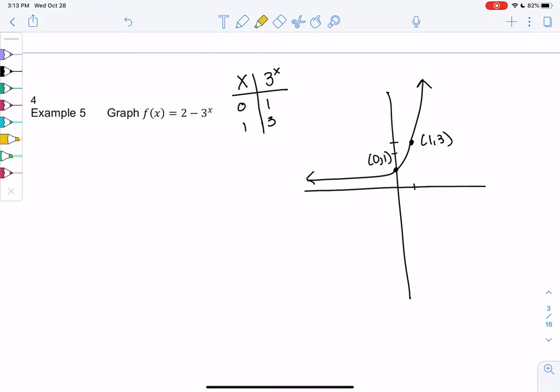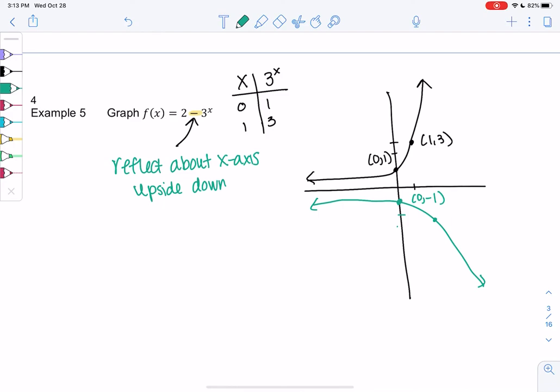So they all look really similar, but the steepness is different based on the base. And so let's do the transformation. So the first transformation is a negative, which tells me to reflect the graph about, since the negative's on the outside, we reflect about the x-axis, which means it's just upside down. So now we go through 0, negative 1, and then we go through 1, negative 3. Right, we're just flipping it upside down.